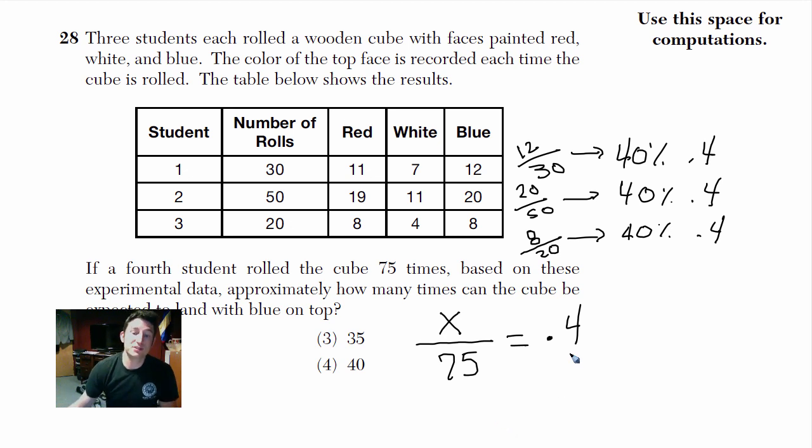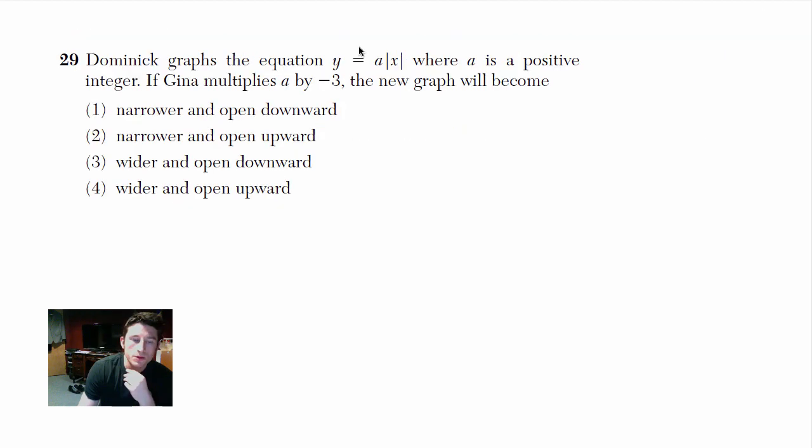So now this is a pretty easy problem. I just put this over 1, and I cross multiply. So 75 times 0.4 gives me 30. So x equals 30. Choice 2, and you're done. That's it. So this was how many times blue shows up, the total rolls, and the chances. We're going to set it equal to the chances, which we found before was 40%.